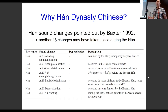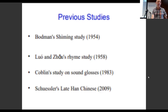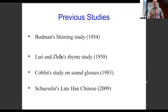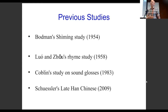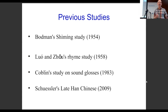These are some of the questions we'd like to answer. In previous studies, there was a Qing Dynasty scholar who did some work on Han Dynasty, and in modern times we have Bodmin's Shi Ming study. Luo from Luo and Zhou suggested that study — he had Bodmin study the initials while he studied the finals. These studies are still quoted today. After this, Koblin did the sound gloss study in 1983, and then Schussler's Late Han Chinese reconstructions from 2009.